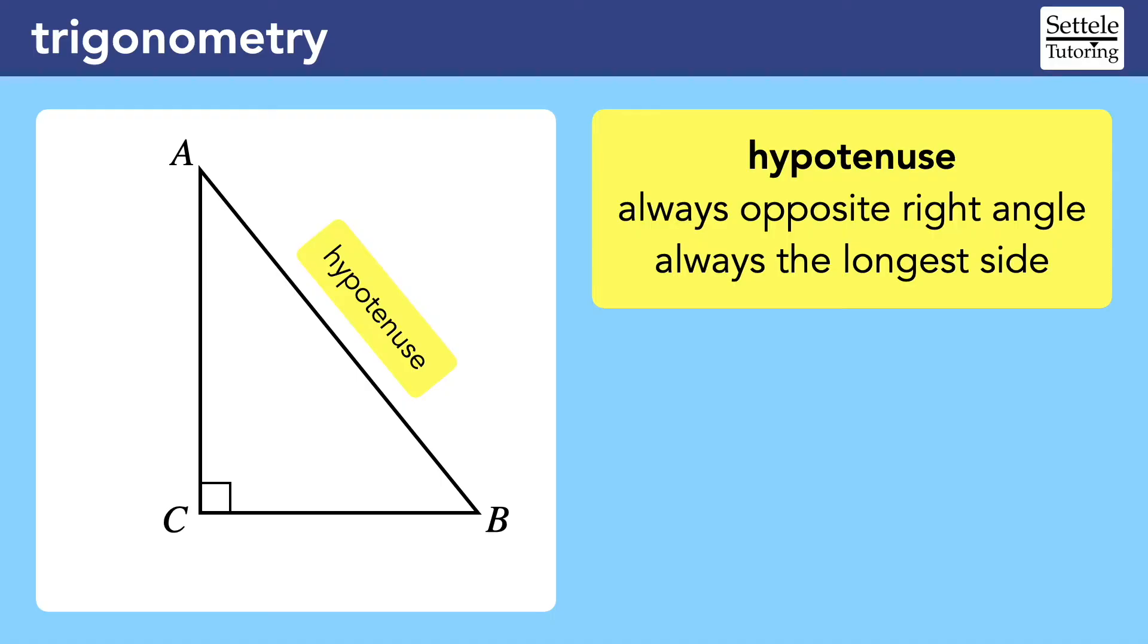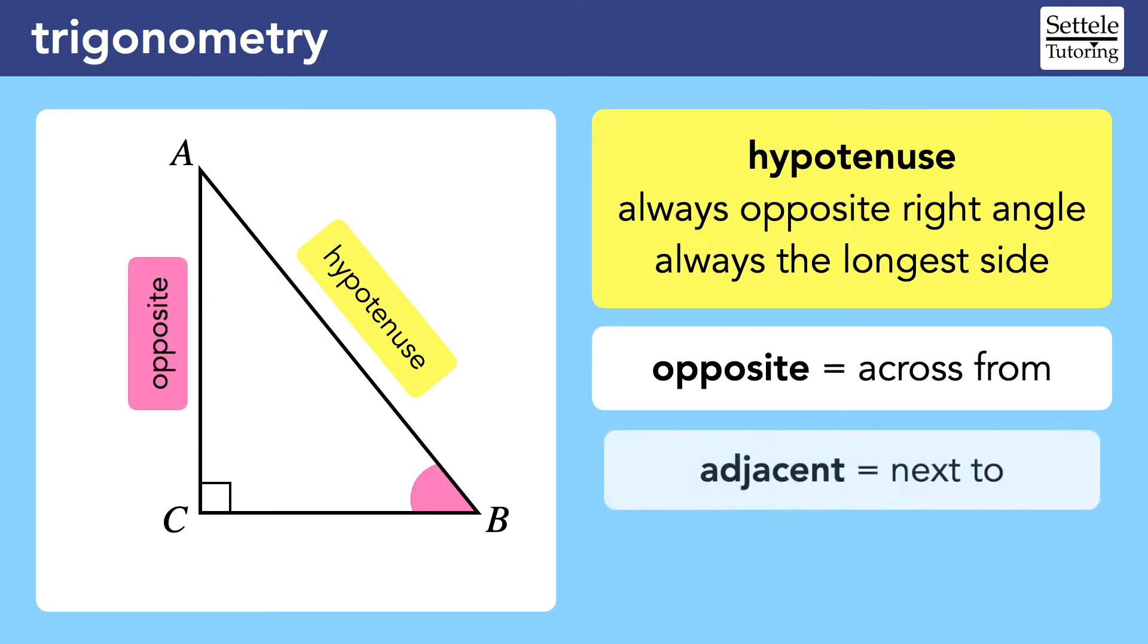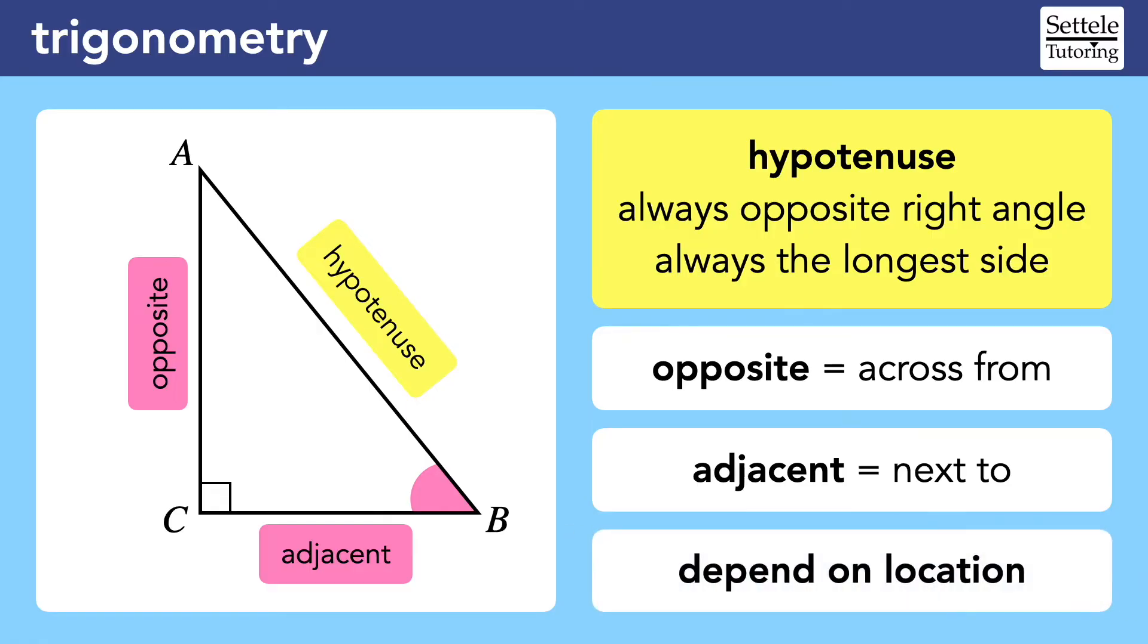The other two sides are called the legs of the right triangle, but trigonometry often requires us to be more specific. If we are focusing on angle B, the opposite side is AC because it's across from the angle. The adjacent side is BC because it's next to angle B. The hypotenuse is also next to angle B, but the hypotenuse will always be the hypotenuse. The opposite and adjacent sides depend on location.